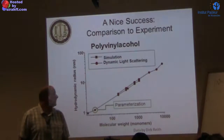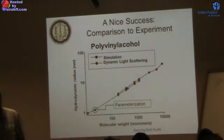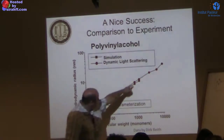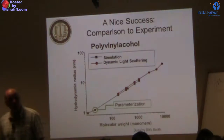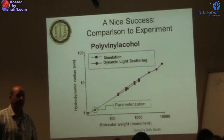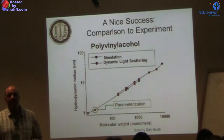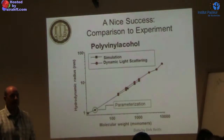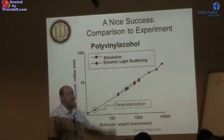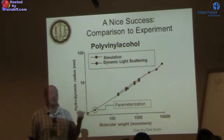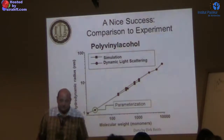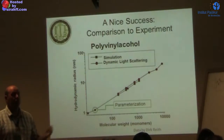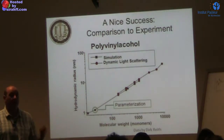The black dots are simulation, the red dots are DLS. Although the parameterization was done on a short chain, at the scale of a few thousand monomers you get quite good agreement with experimental data. Not only the slope is meaningful, but also the prefactor — and the prefactor is really what you get from the IBI. Homogeneous systems are very effective for this.